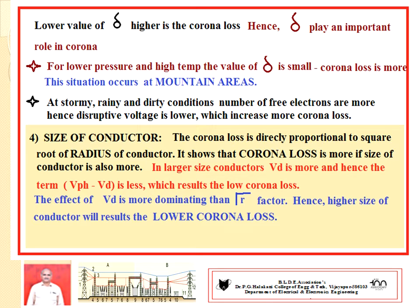Number four — a very interesting factor — size of conductor. The disruptive voltage expression is directly proportional to the square root of R, where R is the radius of the conductor. The corona loss is also directly proportional to the square root of the radius of the conductor, showing that corona loss is more if the size of conductor increases. However, in larger conductors, disruptive voltage Vd is also more, so the difference between V-phase and Vd becomes less, resulting in a lower value of corona. Hence, the effect of Vd is more dominating than the root-R factor, and a higher size of conductor results in lower corona loss.